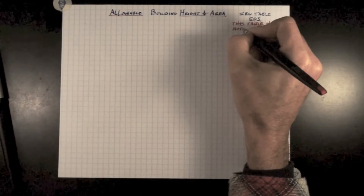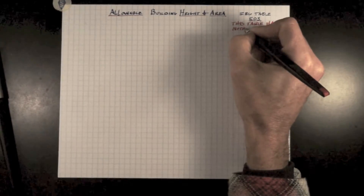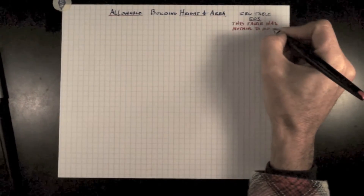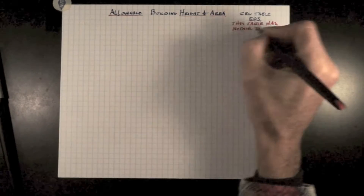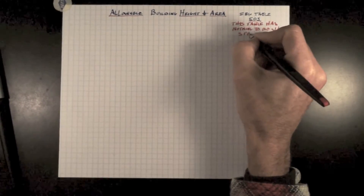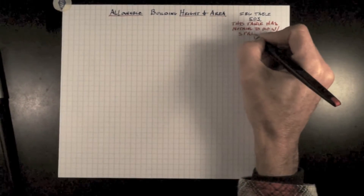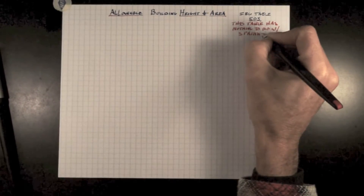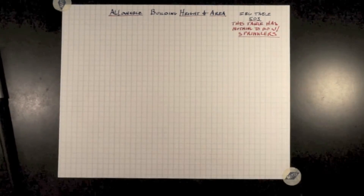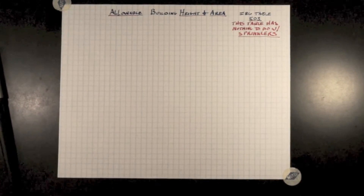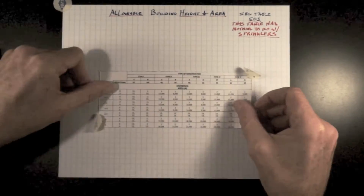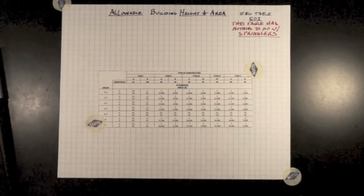This table has nothing to do with sprinkling a building. If you sprinkle the building, all these numbers may be increased depending on a calculation in the next section of Section 500. So let's take a look at the table itself.